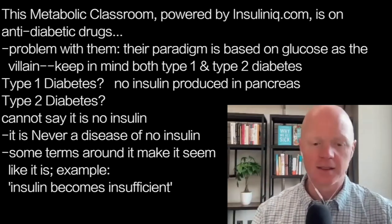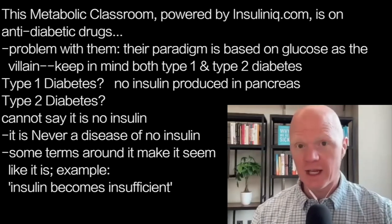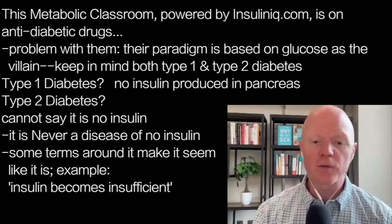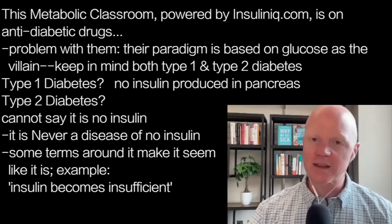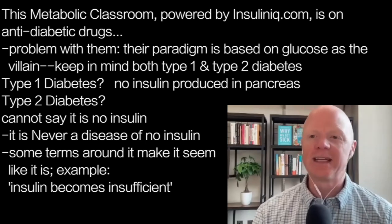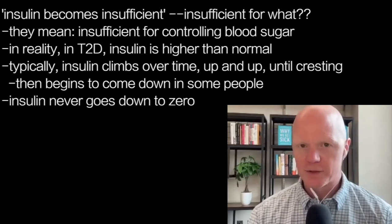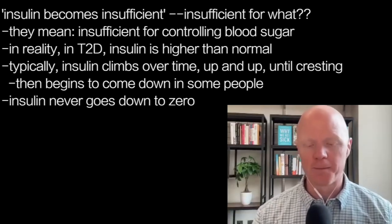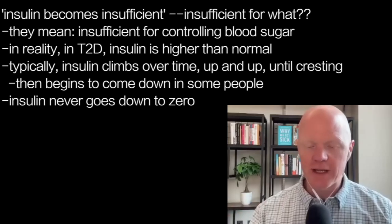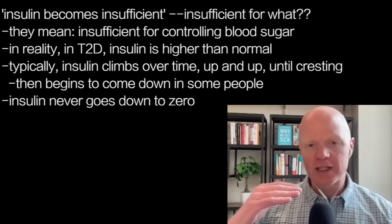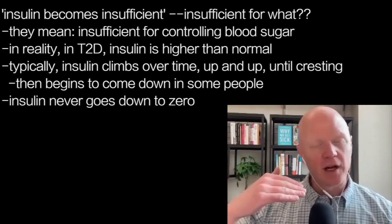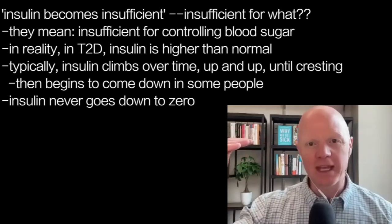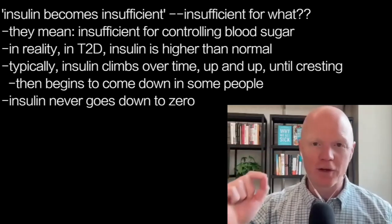With type 2 diabetes, you can't say it's a disease of no insulin — because it isn't. Type 2 diabetes is never a disease of no insulin. Unfortunately, some language surrounding type 2 makes us think otherwise. You'll hear terms like 'insulin becomes insufficient,' but that's a relative term — insufficient for what? What they mean is it's insufficient for controlling blood sugar levels. In reality, in actual type 2 diabetes, insulin levels are higher than normal. Over the life of a type 2 diabetic, insulin has gone up and up, year over year, and then in some instances it may crest — it peaks and starts to come down a bit.